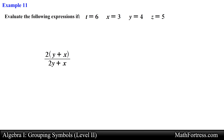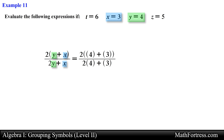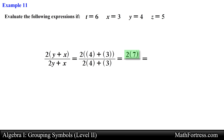Alright, the expression 2 times the quantity (y plus x) over the quantity (2y plus x). We substitute each variable using parentheses: y equals 4 and x equals 3. We have a fraction bar as a grouping symbol. In the numerator, we first add 4 and 3 to get 7, then multiply by 2 to get 14.